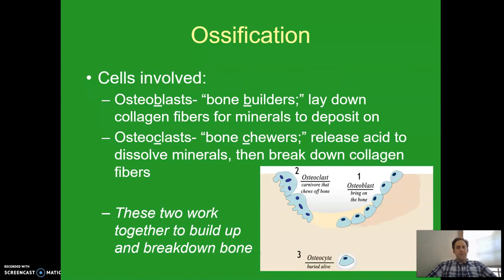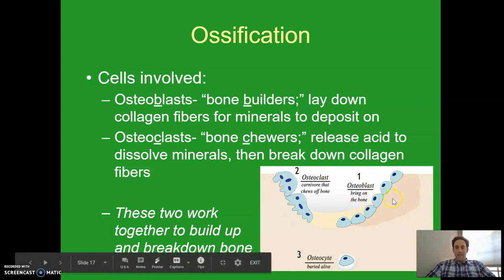So what are the cells involved in this process? The first group of cells are called osteoblasts — think 'blasts' because these are our bone builders. These are the cells that actually lay down collagen fibers, which are kind of the base of the bone, and then that allows minerals to deposit on them. So the osteoblasts are adding new bone — they build the bone up.